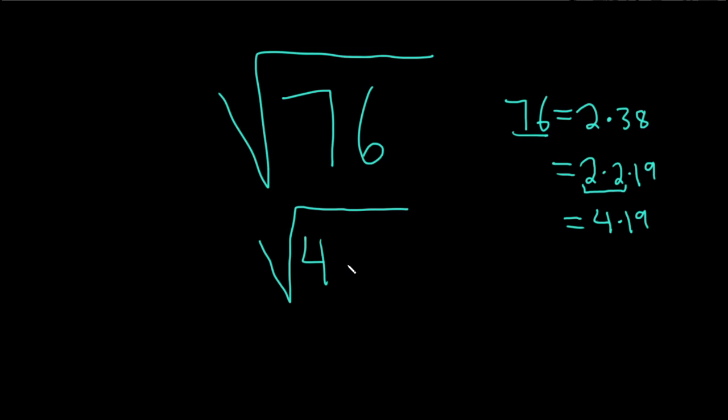So this is 4 times 19. Then we can use properties of square roots.